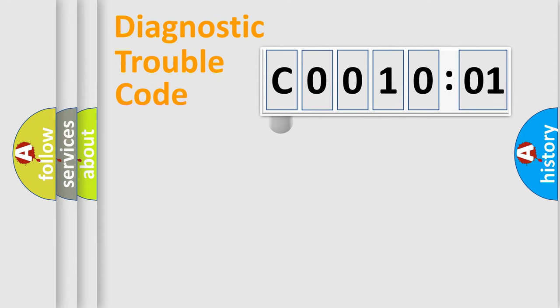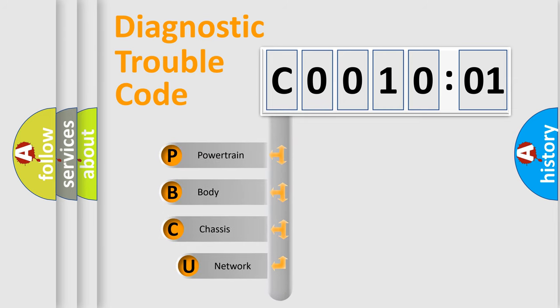First, let's look at the history of diagnostic fault code composition according to the OBD2 protocol, which is unified for all automakers since 2000. We divide the electric system of automobile into four basic units.